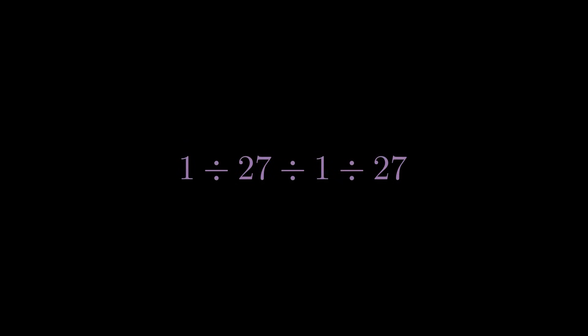When you look at this expression, your brain immediately notices the symmetry. There are two identical chunks here, each saying 1 divided by 27. So the tempting thought is, why not just evaluate each of these pairs separately, and then divide one result by the other?